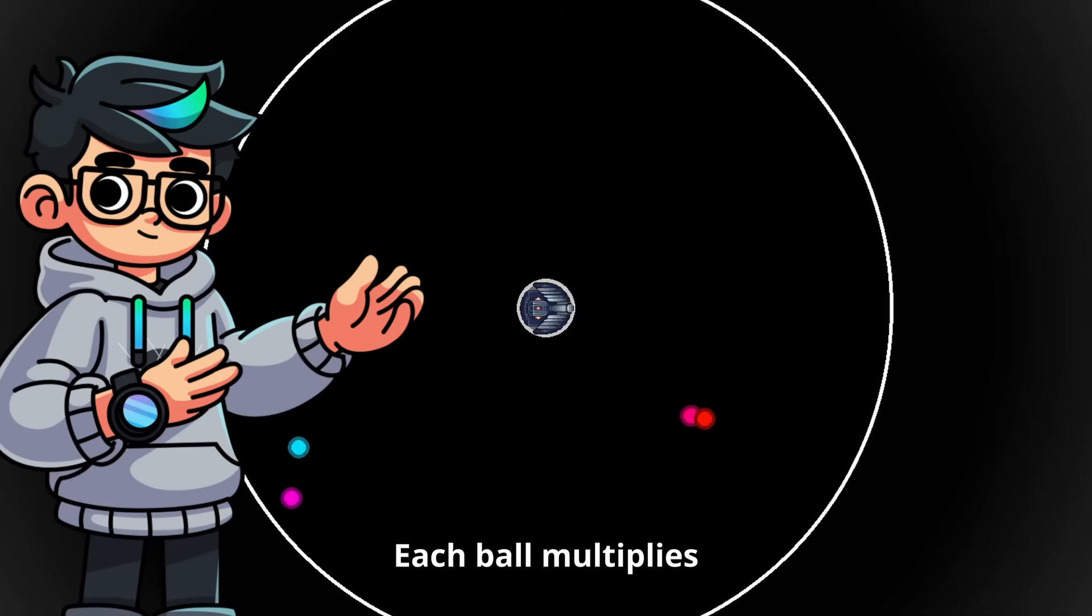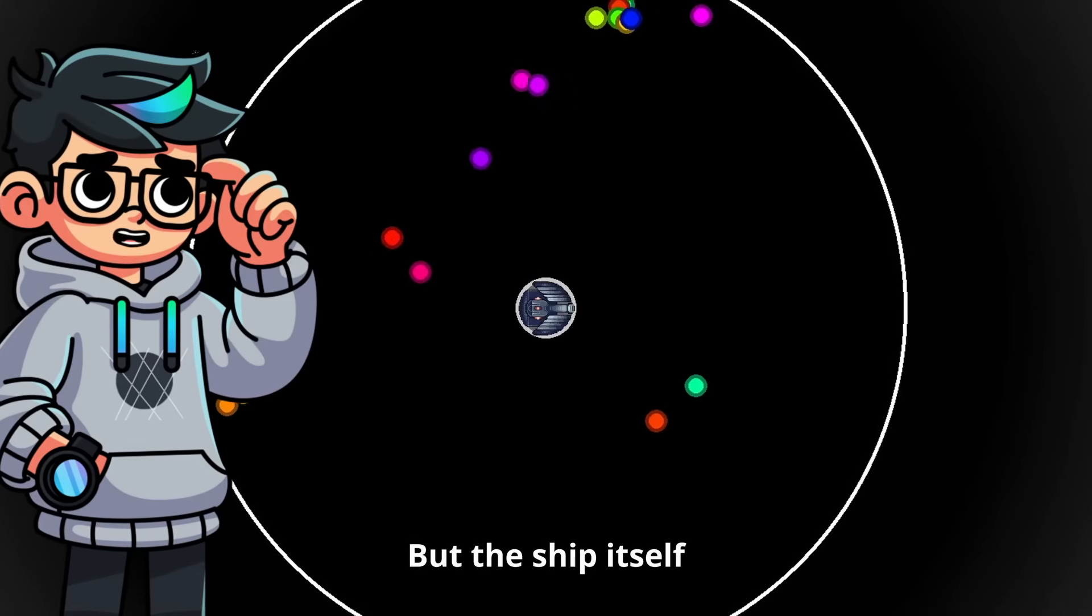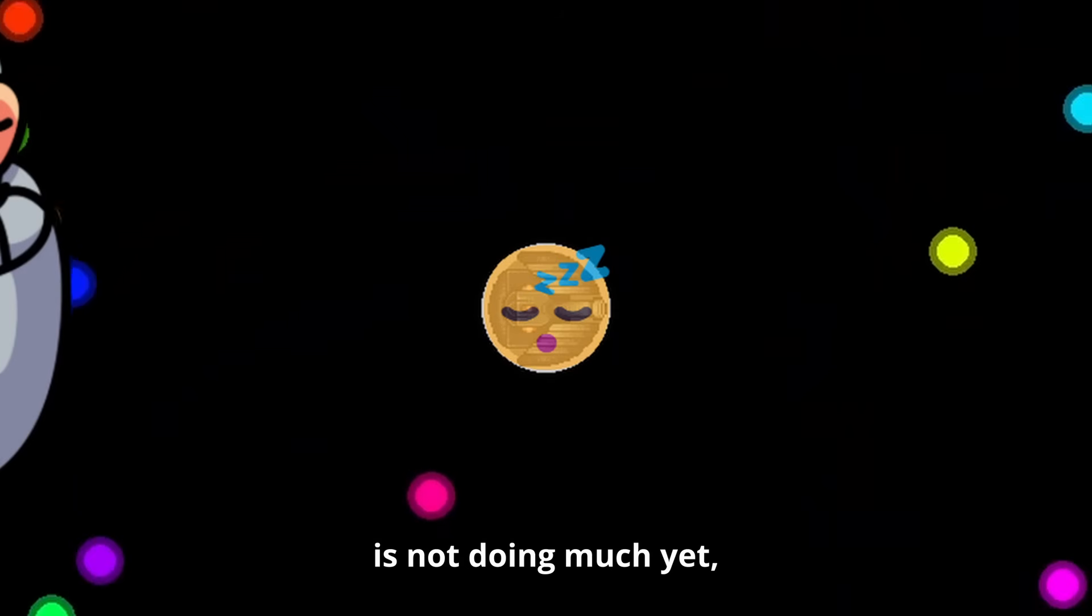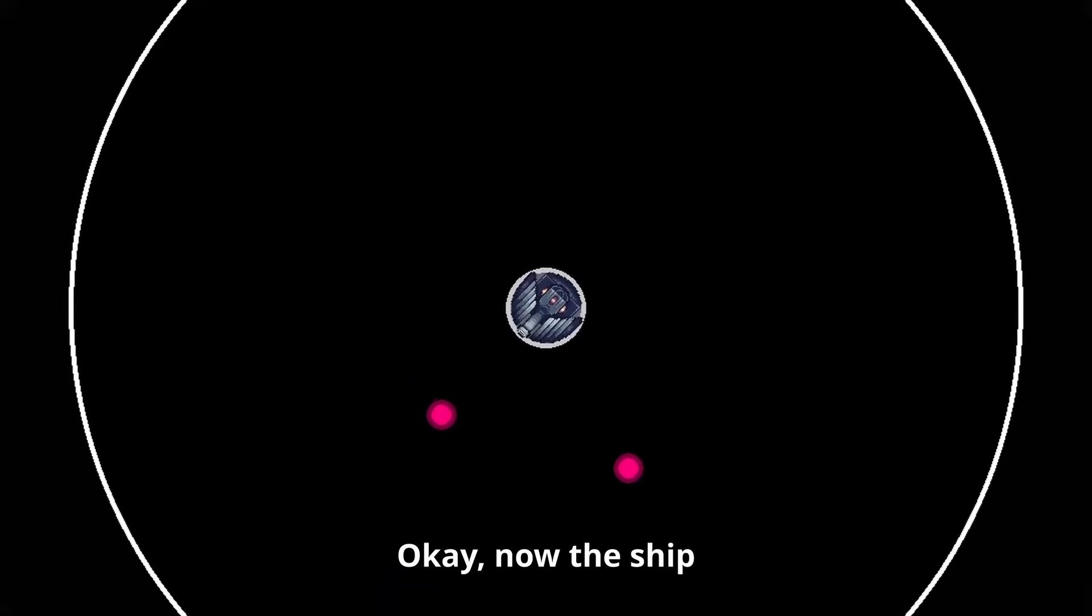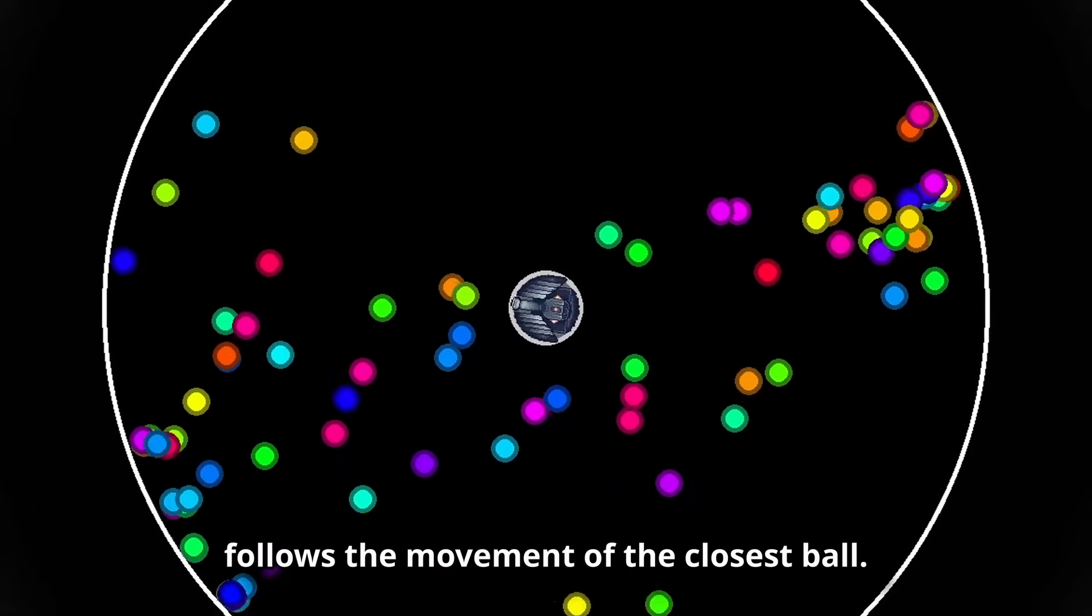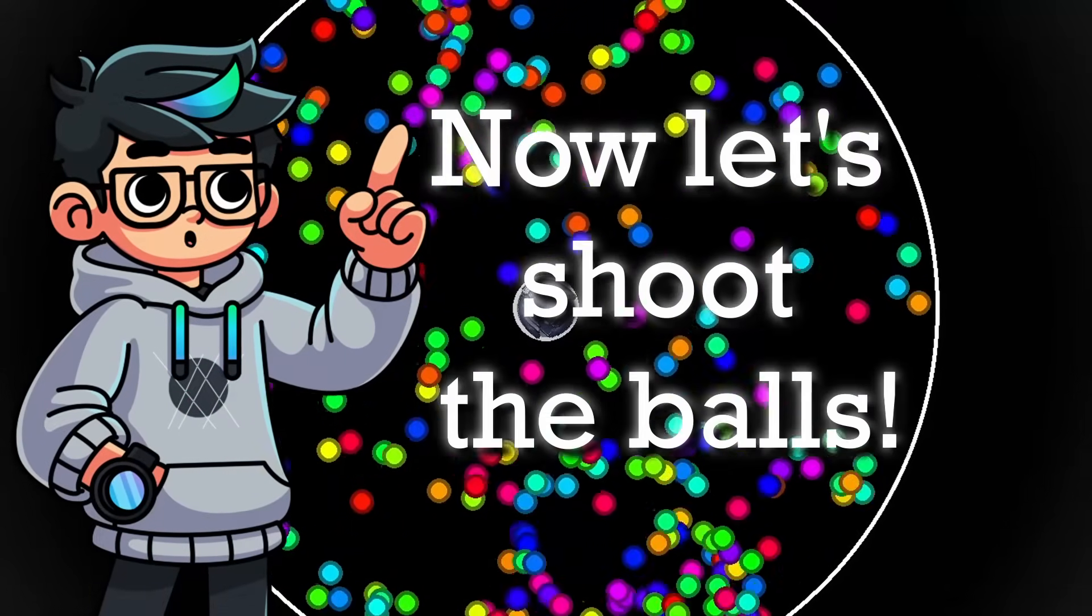Each ball multiplies when it collides with the border. But the ship itself is not doing much yet, so we have to fix it. Okay, now the ship follows the movement of the closest ball. Now let's shoot the balls.